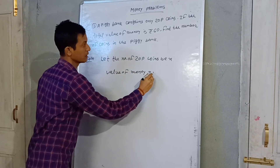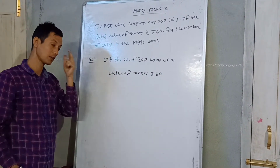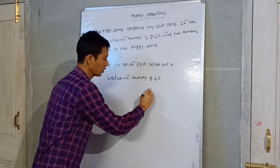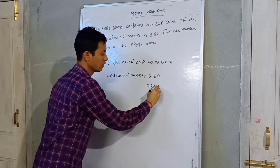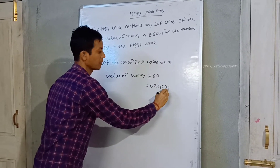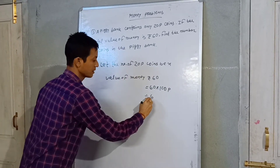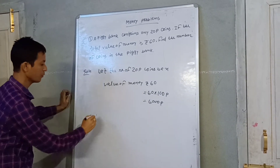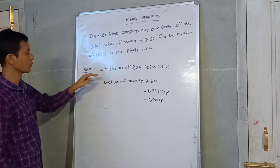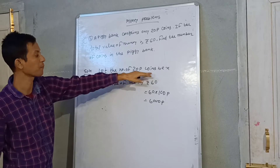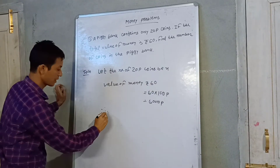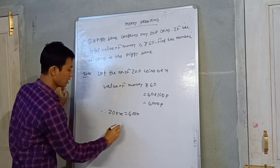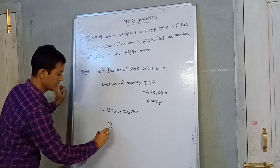The value of money is rupees 60. We know that 1 rupee equals 100 paisa, so 60 into 100 paisa equals 6000 paisa. Therefore, we can write 20 into x equals 6000.